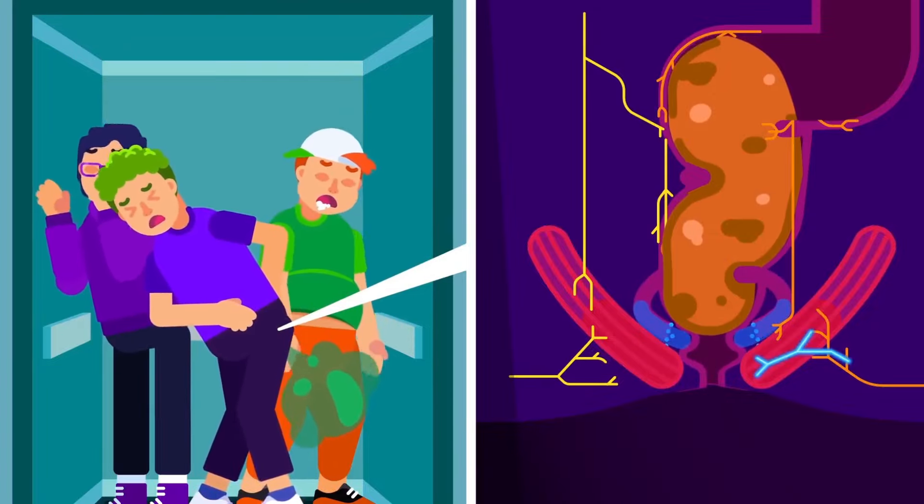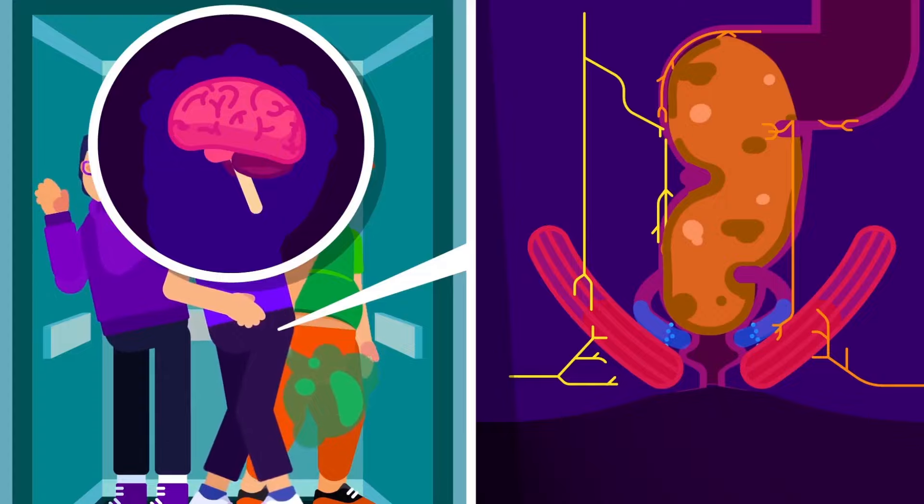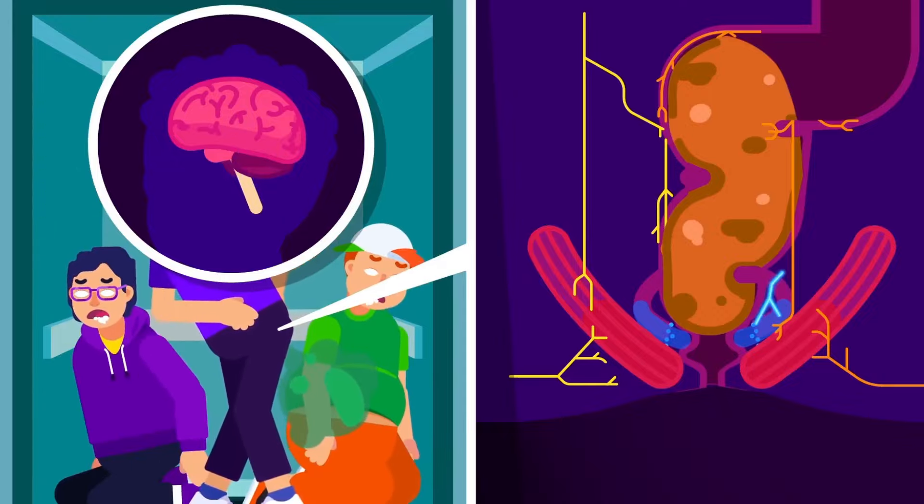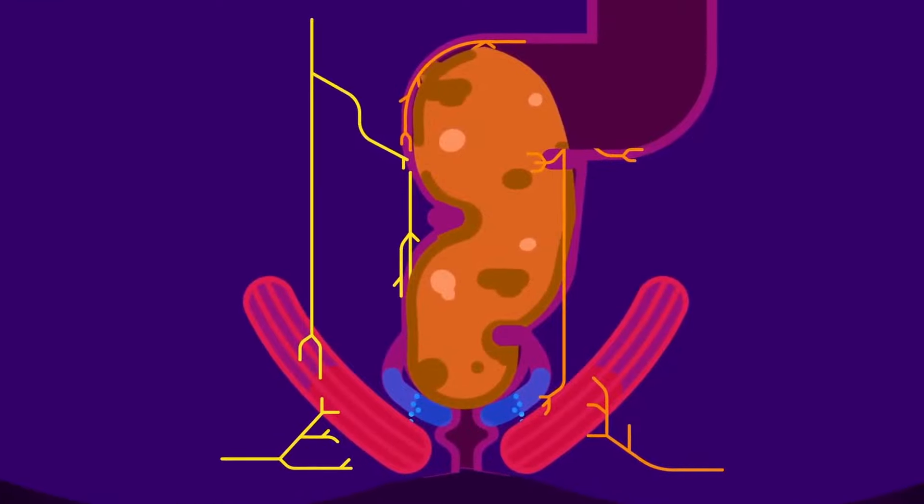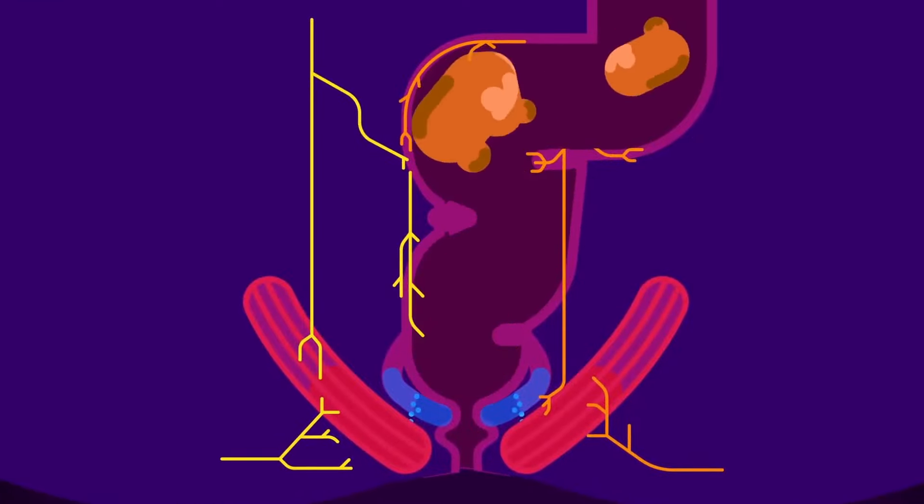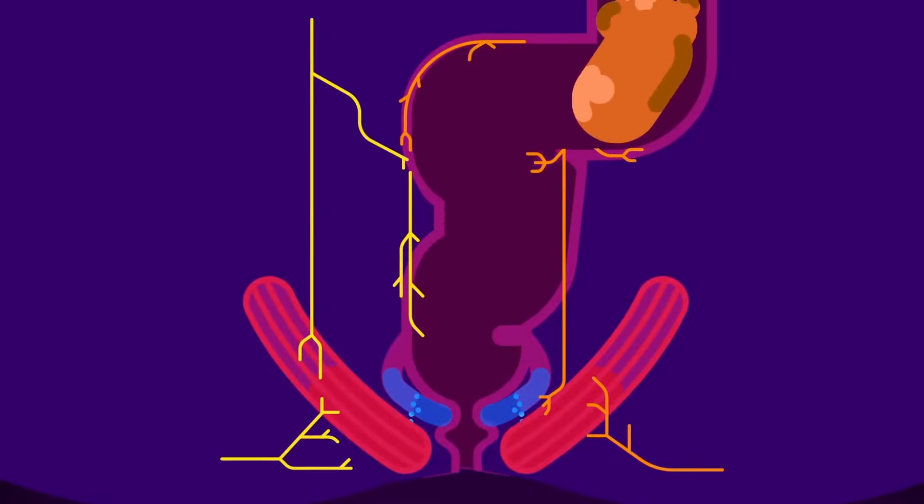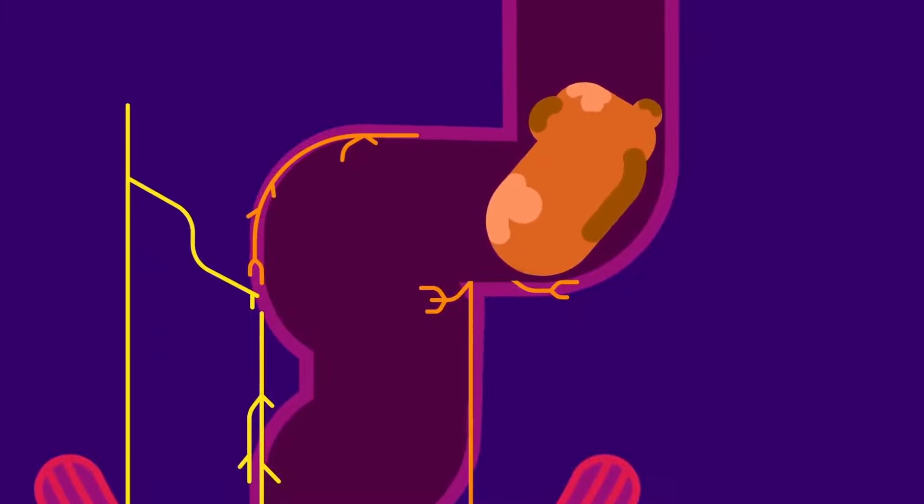If the brain rejects the message, the rectum will contract and result in reverse peristalsis, forcing the stool to move back to the colon to reduce the load pressure and the stretch on the rectum. However, this will cause the stool to undergo water reabsorption again, which makes it drier and may lead to constipation.